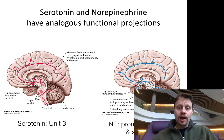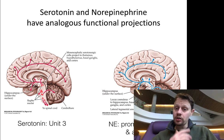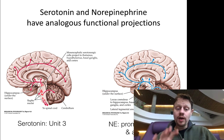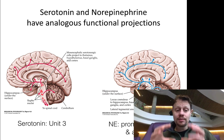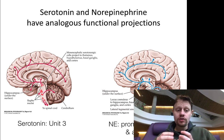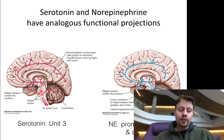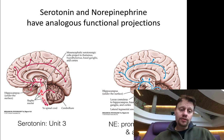Just for context, serotonin and norepinephrine also have very similar projections, where there are cells in the brainstem that make the neurotransmitter and then project their axons throughout the brain. For example, serotonin is made in areas called the raphe nuclei, scattered throughout the brainstem, and those axons extend all throughout the brain.